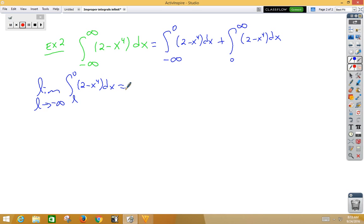Well, that's a pretty basic integral to do. We've got the limit as l approaches negative infinity. Integrate 2, you get 2x. Integrate x to the 4th, you get x to the 5th over 5. And we're doing that from l to 0.